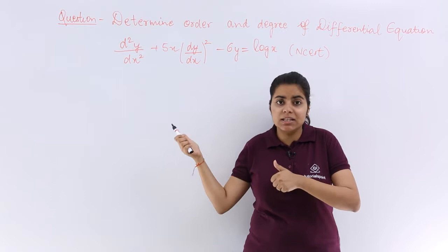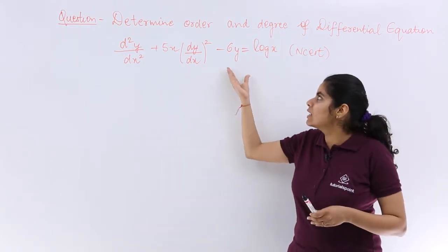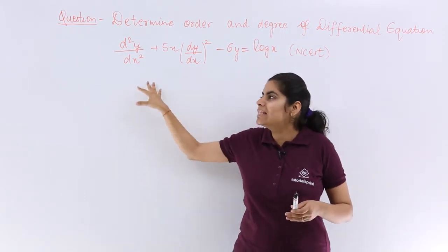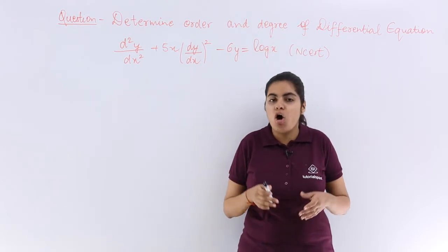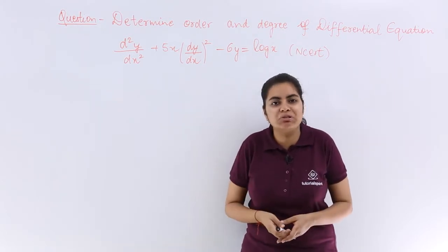Now you see that this is a differential equation because there is a dependent variable, independent variable, and differential coefficients of the dependent variable with respect to the independent variable.